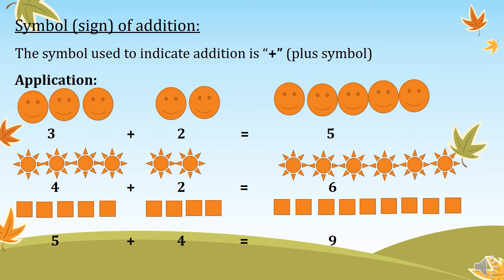Another example: we have two groups of sums. The first group contains four, and the second group contains two. The sum of the first and the second group is one, two, three, four, five, six. The sum of the first and the second group is a group of six.